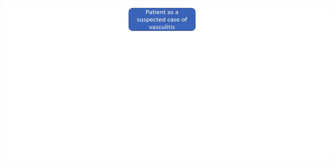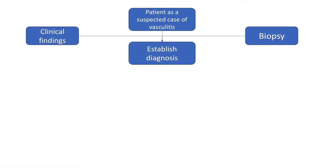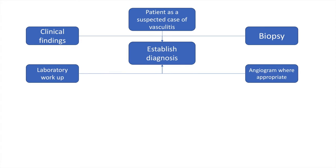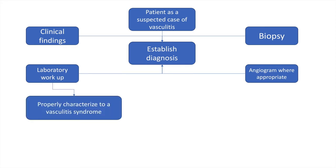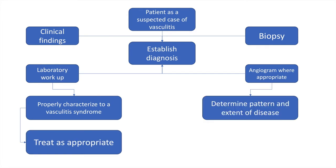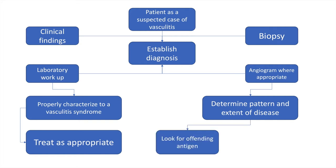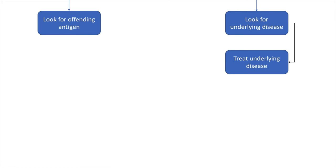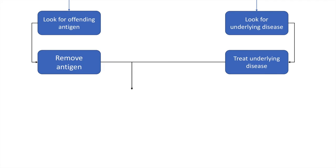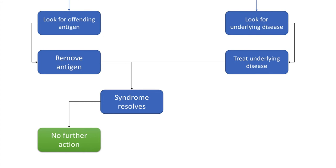Let us now move on to a stepwise approach to vasculitis. In a patient with suspected vasculitis, the diagnosis can be established based on clinical findings, biopsy, angiogram where appropriate, and laboratory workup. If categorized as a vasculitis syndrome, we treat appropriately. If not, we determine the pattern and extent of disease, look for an offending antigen or underlying disease, treat the underlying disease or remove the offending antigen, and if the syndrome resolves, no further action is required. If it does not resolve, we treat with an empirical course of glucocorticoids.